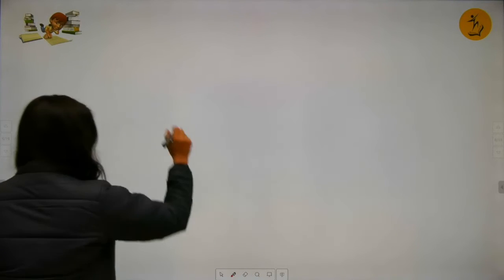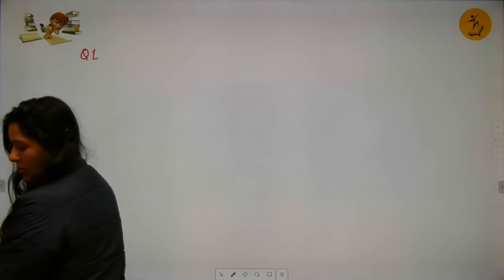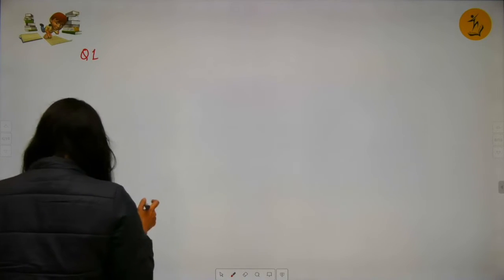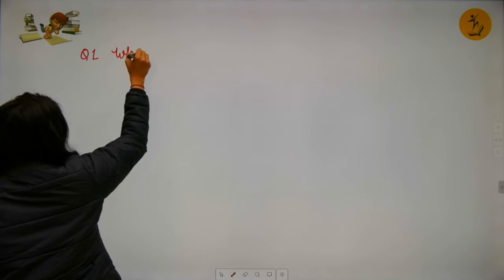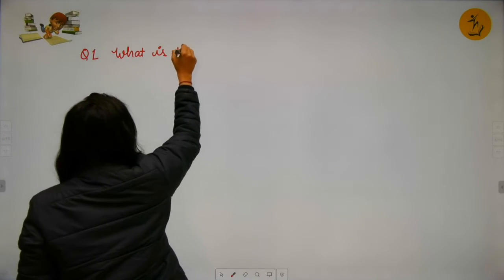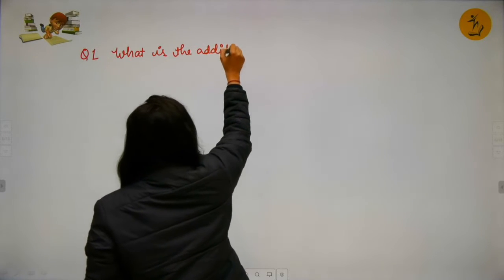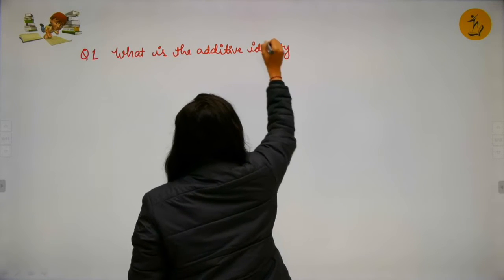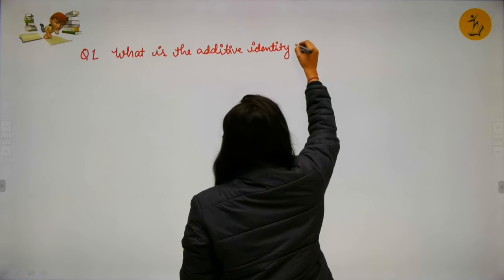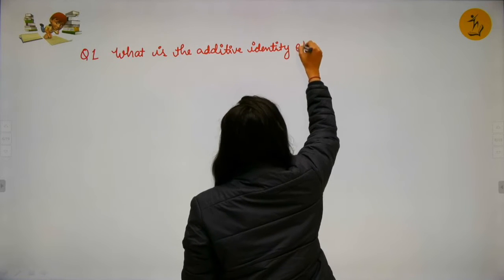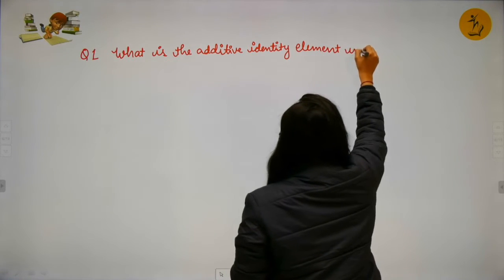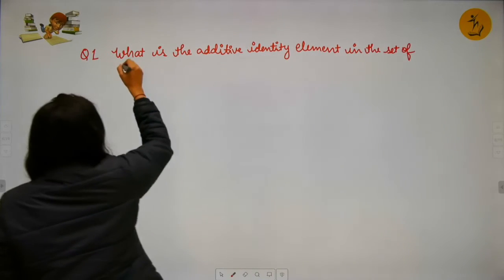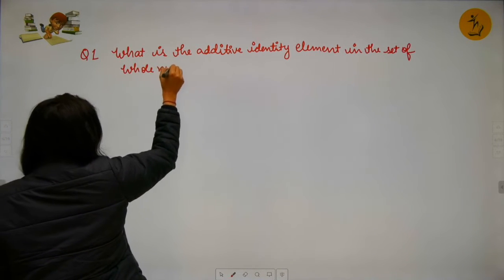Question number one: What is the additive identity element in the set of whole numbers?